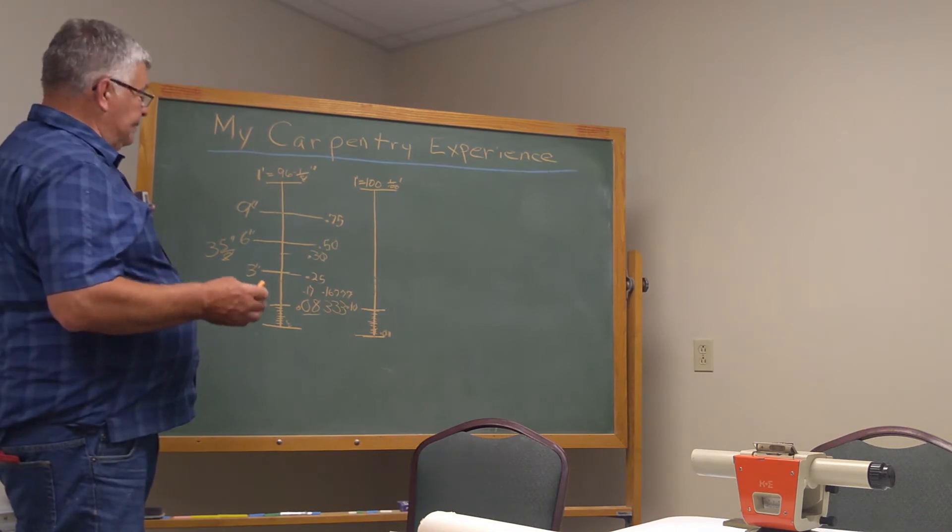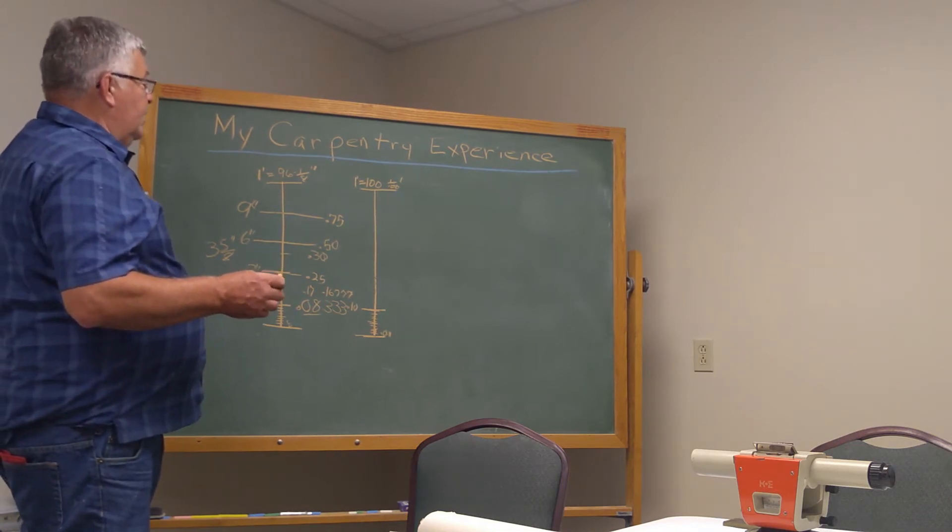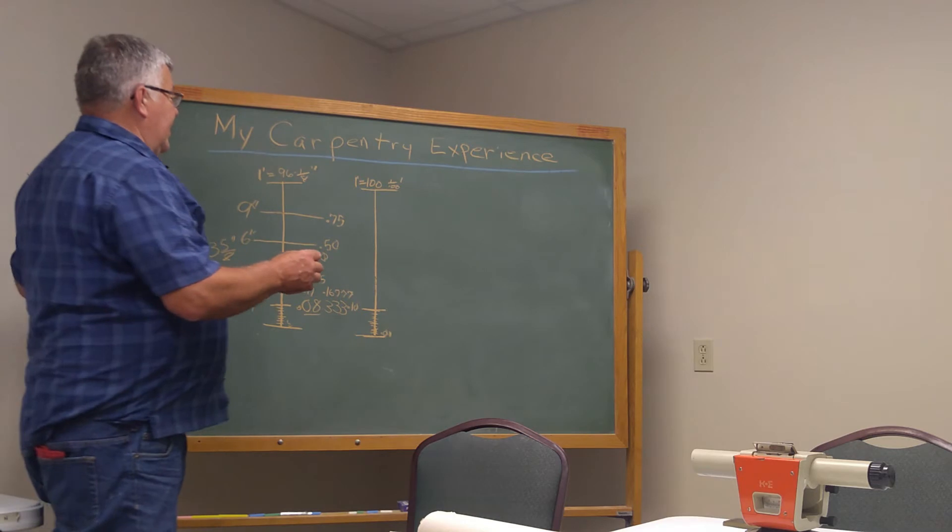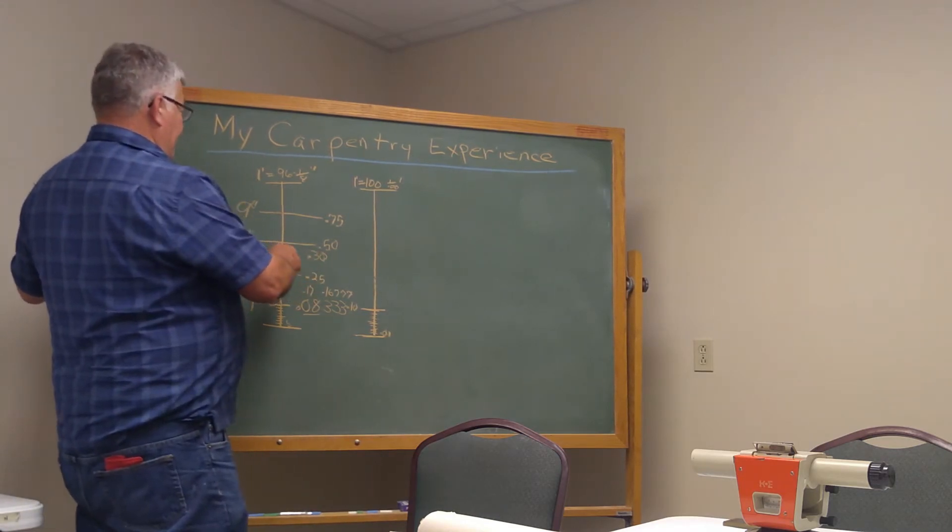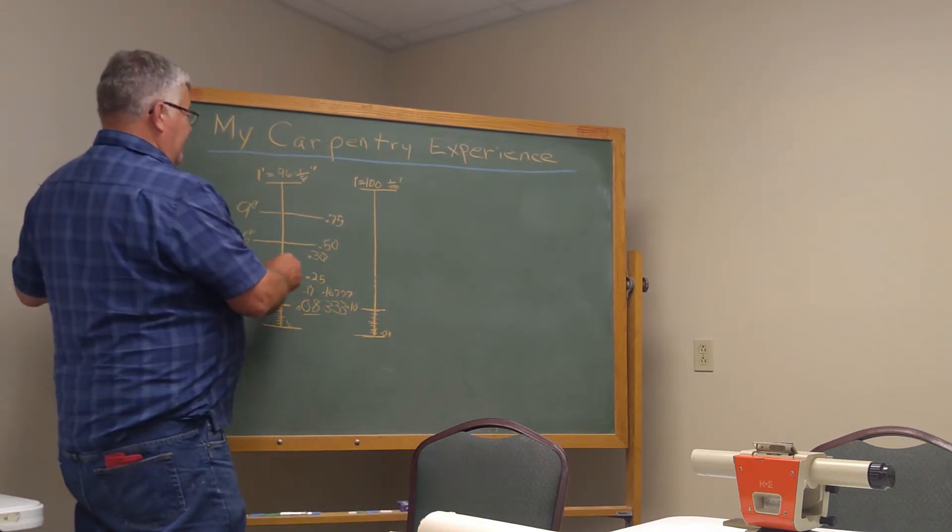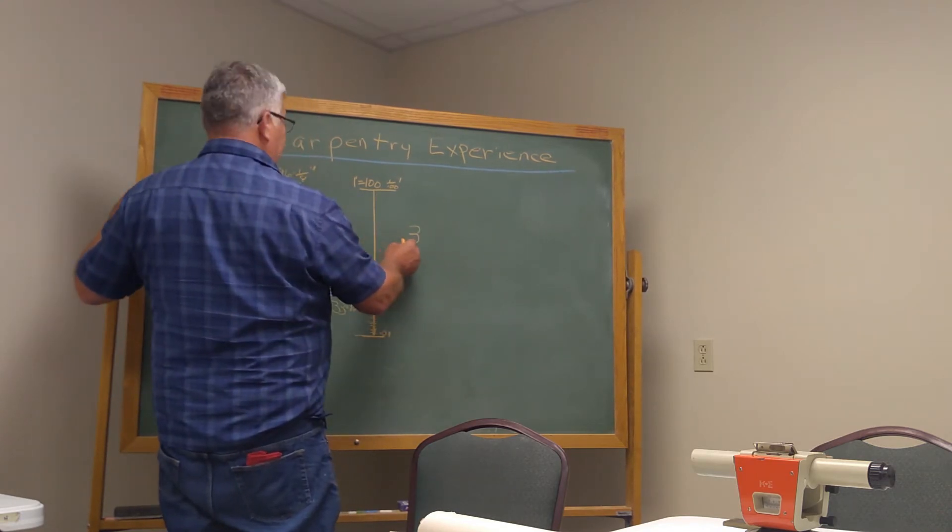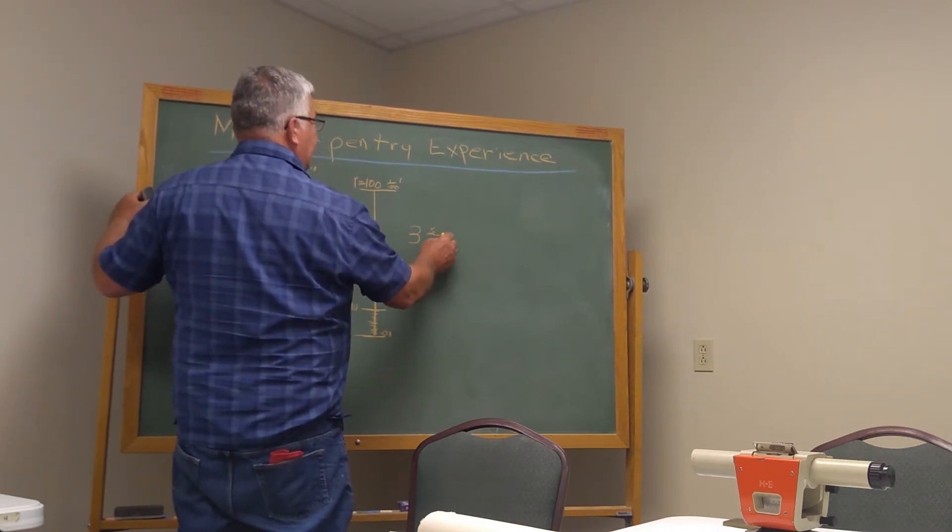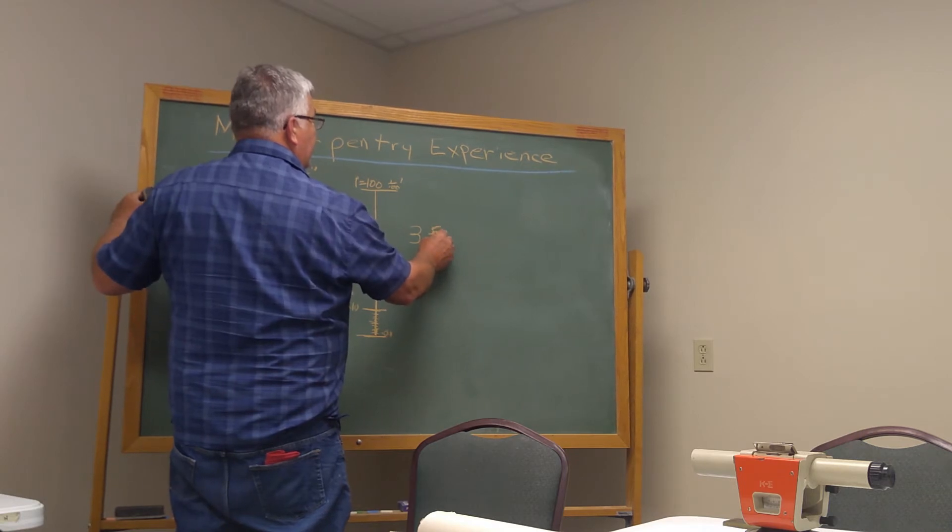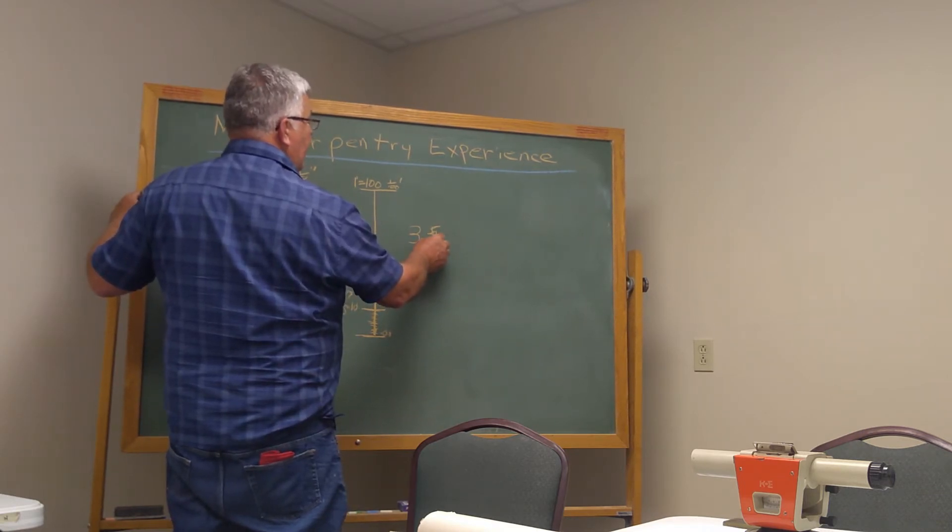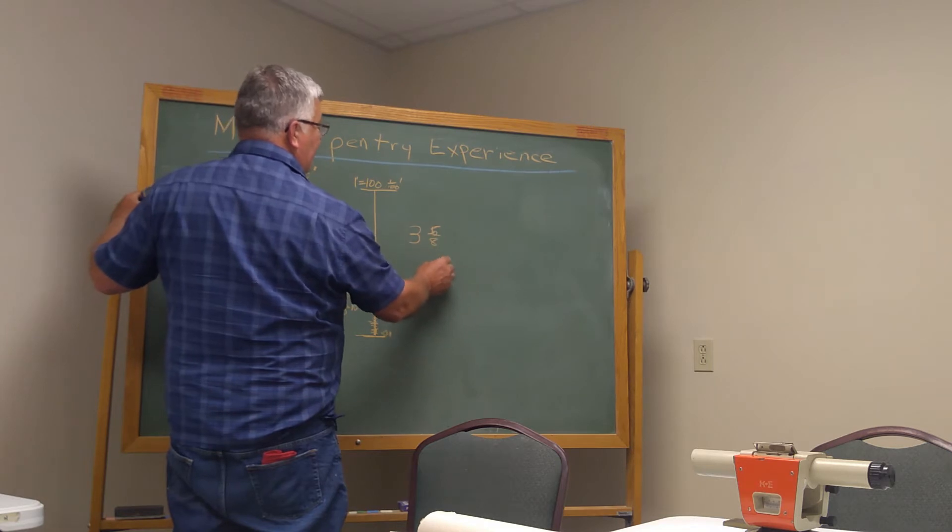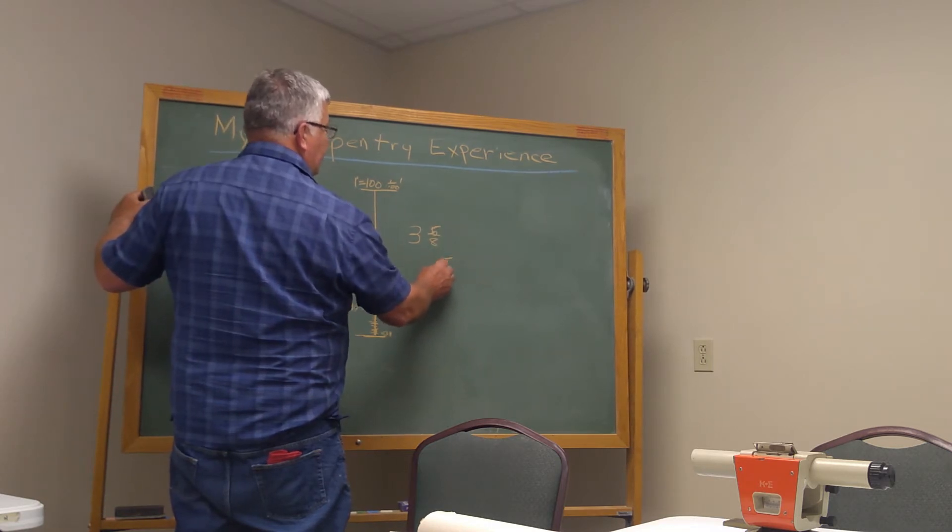Now, to kind of pan that out, let's take, for example, let's take three and five-eighths inches and convert it to tenths and hundredths. Okay? Three and five-eighths inches. You would divide the five by the eight.